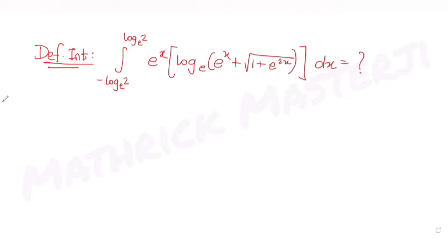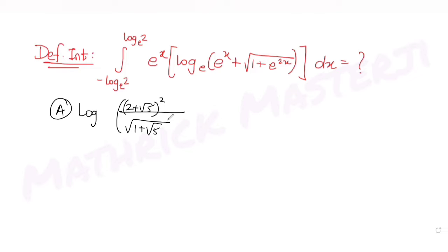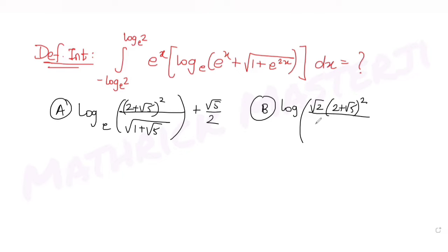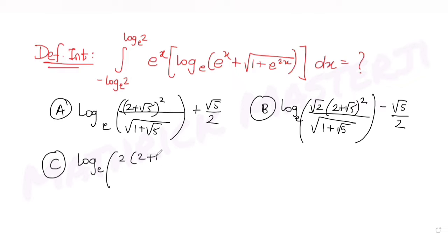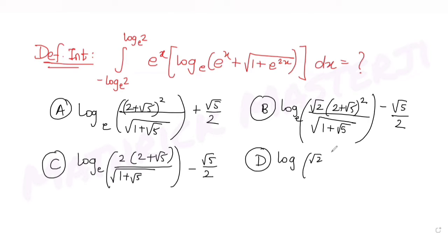The answer choices given are: (A) log((2 + √5)² / √(1 + √5)) base e + √5/2; (B) log(√2 · (2 + √5)² / √(1 + √5)) base e − √5/2; (C) log((2 + √5) / √(1 + √5)) base e − √5/2; and (D) log(√2 · (3 − √5)² / √(1 + √5)) base e + √5.